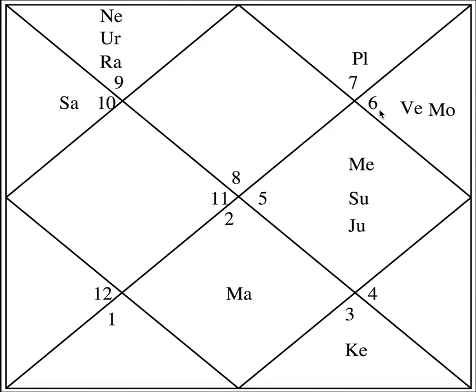Moon sitting in the sign of Virgo means the mother of this native is a very picky, very choosy person — very particular about things and very nitpicky about details, which she definitely is, as he says. This gene will also come to him and because of this he also has this nature. He has moon and Venus conjunct together. This is called a conjunction — when two planets sit together they try to influence each other.